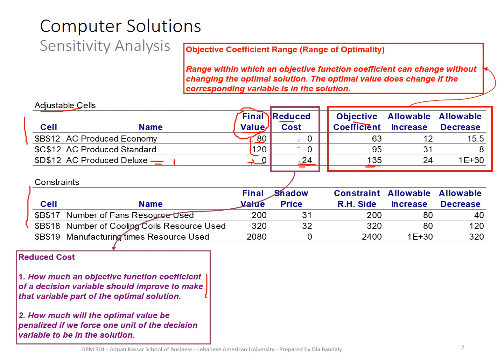Now, the second part is called the range of optimality. What's that? Look, this is my optimal solution, right? It's 80, 120, and zero. If I change, and these are our original objective coefficients, I can change 63 between, or I can increase 63 up to 12, so up to 75, and I can decrease it up to 15.5, and I'm sure that this optimal solution does not change. That's why it's called the range of optimality. And the same applies for this, and the same applies for that.